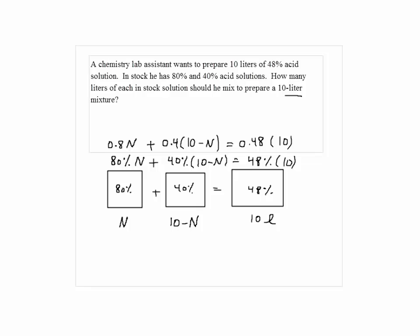Now if I want to eliminate the decimal, I can multiply each term by a factor of 10. I can multiply each term by 100. If I do that I would eliminate all the decimals. So here I get 80, that's the same thing, I can multiply the decimal. And I would get 80N plus 40 times 10 minus N is equal to 48 times 10.